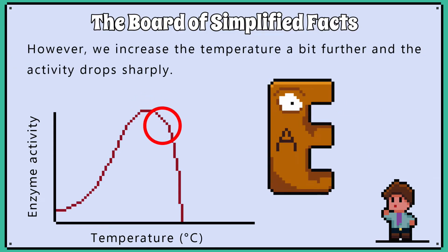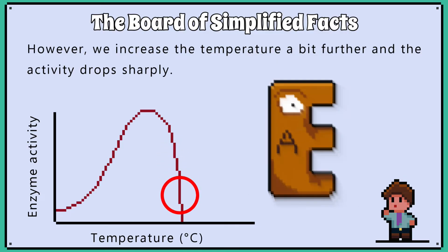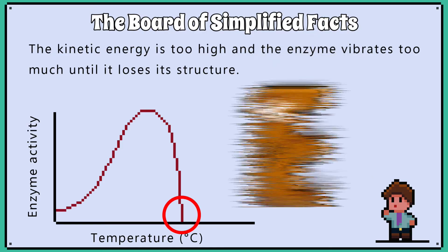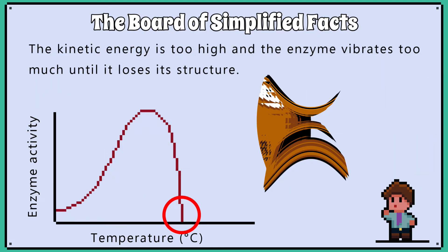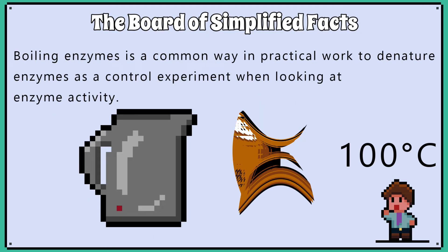However, if we increase the temperature a bit further, the activity drops sharply. The kinetic energy is too high, and the enzyme vibrates too much until it loses its structure. The active site's specific shape is lost and the enzyme is denatured. Boiling enzymes, for example, is a common way in practical work to denature enzymes as a control experiment when looking at enzyme activity.